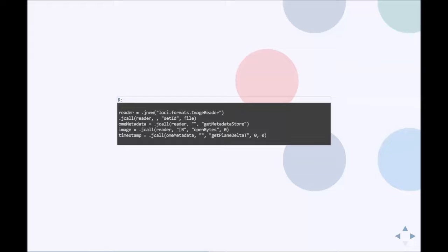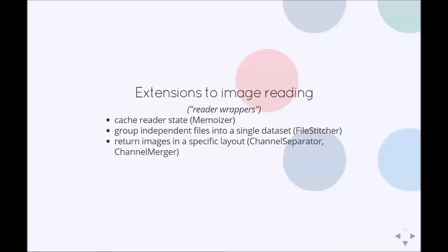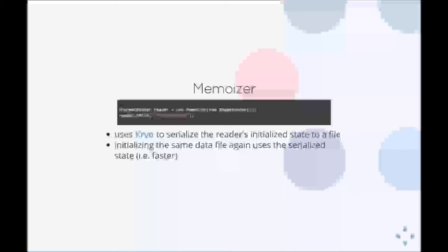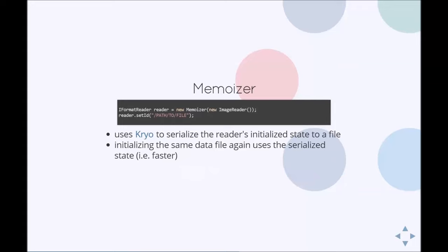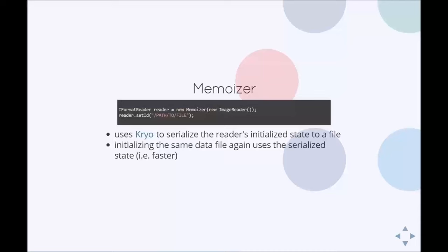Beyond support for specific file formats, Bioformats also provides extensions to perform various commonly useful tasks behind the scenes without changing the API calls needed after a reader is created. Those tasks include saving the state of an initialized reader to a file, grouping individual files into a single dataset, and ensuring that images are returned in a specific consistent layout or order. The most useful reader wrapper at the moment is called MemoWizer. It uses the Kryo library to serialize the reader's state to a file on disk, so that any subsequent initialization of the same file loads the cached state instead of reinitializing from scratch. For very large datasets this brings reinitialization time down from potentially several minutes to a few milliseconds.